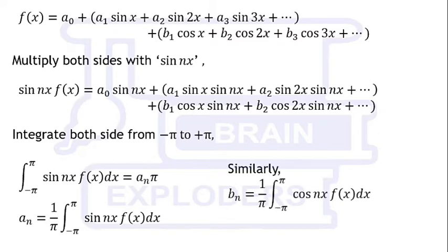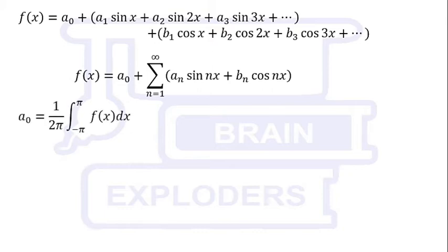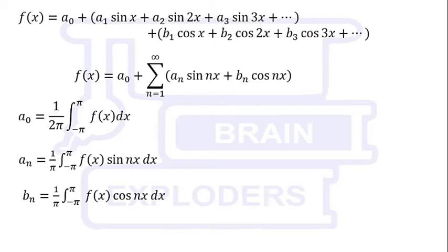Similarly, bₙ = 1/π times integration from -π to +π of cos(nx)f(x)dx. Overall we have f(x) = a₀ + summation n equals 1 to infinity of aₙsin(nx) + bₙcos(nx), where the values of constants can be calculated with these obtained integrals. This expression is known as Fourier series expansion.